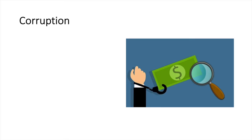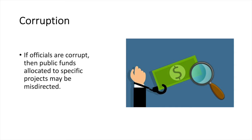Corruption can lead to government failure if corrupt officials misallocate public funds. Instead of funds being spent in a manner that would benefit society the most, officials may turn to other projects that they have been enticed towards. They may also award contracts to higher cost contractors that they might have a relationship with, potentially with the anticipation of a future benefit.